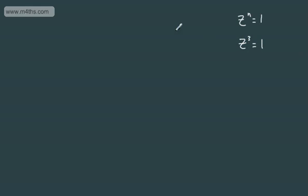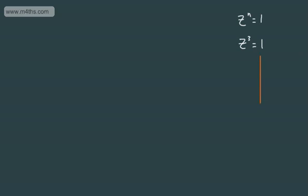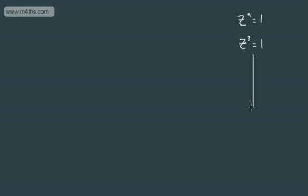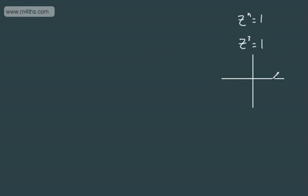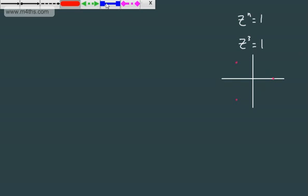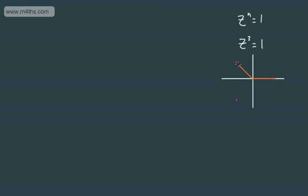The fundamental theorem of algebra tells us there are going to be 2 more roots. We can show these on an Argand diagram. We'll have the one real root, which is 1, lying on the positive real axis. The other two are equally spaced around a unit circle of 2π radians and form complex conjugate pairs — each with a distance of 1 from the origin.